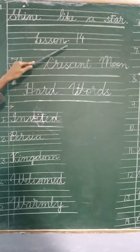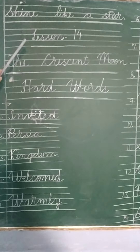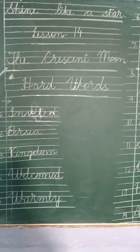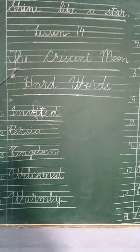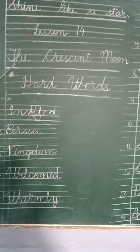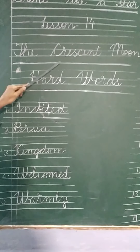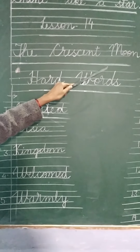Lesson 14. Again you have to draw the blue pencil line. Then write the name of the lesson. The name of the lesson is The Creasing Moon.